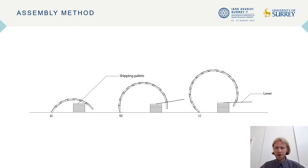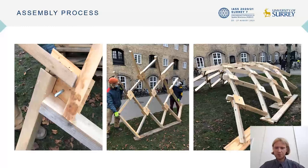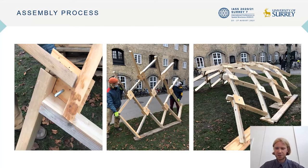The theory behind assembling this kind of structure is that it can be assembled one row at a time, meaning that nobody ever has to work at any height. This proved successful where two people not so strong managed to erect the entire structure in two days. On the left you can see a partially assembled clamp connection, and on the right you see the entire structure assembled halfway.